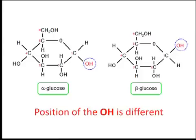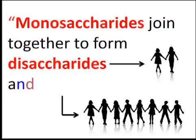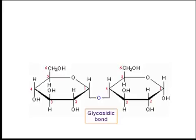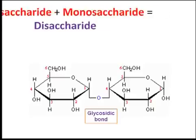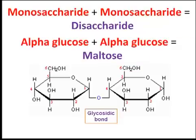Can monosaccharides join up at all? Yes, monosaccharides join together to form disaccharides and polysaccharides. A disaccharide is basically two monosaccharide molecules joined together. For example, two alpha glucose molecules can react to form maltose, which is a disaccharide. The link between the two monosaccharides is called a glycosidic bond.